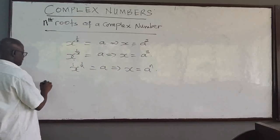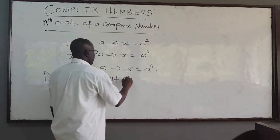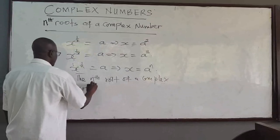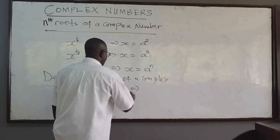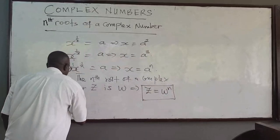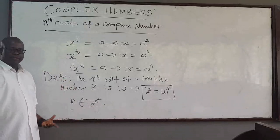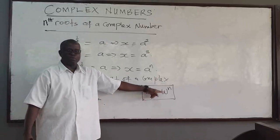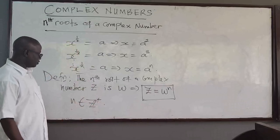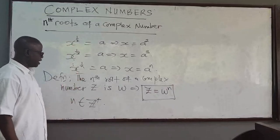So of course, the nth root of x, if equal to some number a, means that x will be equal to a raised to the power of n, where n is a positive integer. In the same way, by definition, the nth root of a complex number z equals w implies that z is equal to w to the power of n. So w is the nth root of z if z equals w to the power of n. Square root means n is 2, fifth root means n is 5 — that is the definition.